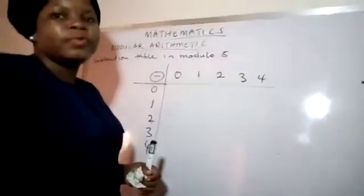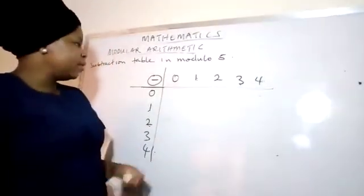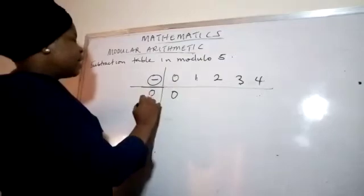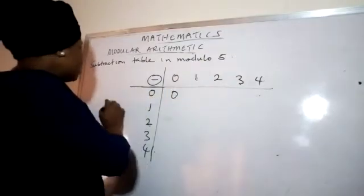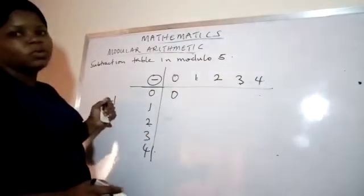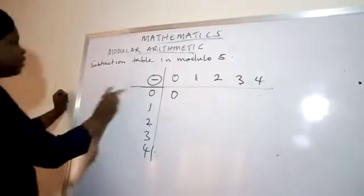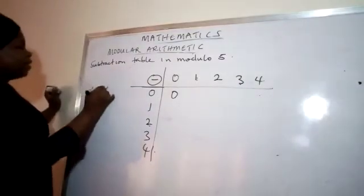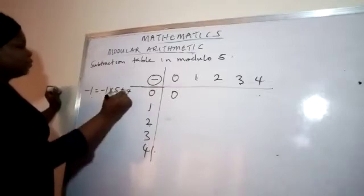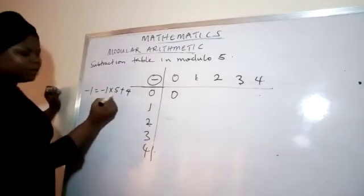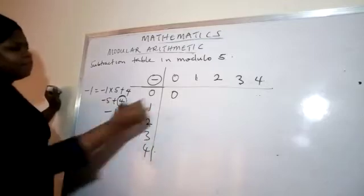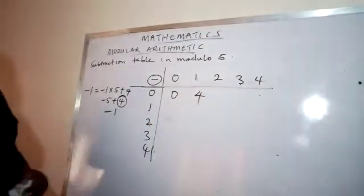Let's see the subtraction table in modulo 5. Now, 0 minus 0 will give me 0. 0 minus 1 is minus 1 — you cannot write minus 1 in mod 5. Don't forget how to solve that. When you have minus 1, it's the same as minus 1 times 5 plus 4, which gives minus 5 plus 4 equals minus 1. So the answer is 4 in mod 5.